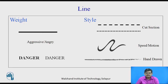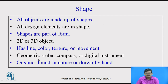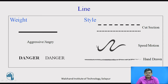We have weight — the thickness of lines. The more the thickness of lines, the more aggressiveness or angry feature is being delivered by that particular line. The bold word 'danger' catches the eye more easily and emphasizes the idea of danger. Then we have style of line: dotted lines convey cut section in engineering drawing; speed-style lines suggest speed or motion and are mostly used in automobile graphics; a hand-drawn style line suggests something handwritten or scratch work-like.